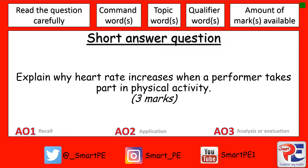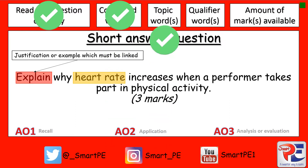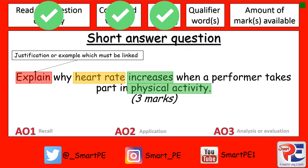Okay, what you should have done is read the question carefully. Once you've done that you should have highlighted the command word 'explain' and annotated on your page that explain means to give a justification or example which must be linked. The topic word is heart rate and the qualifying words are increases in physical activity.